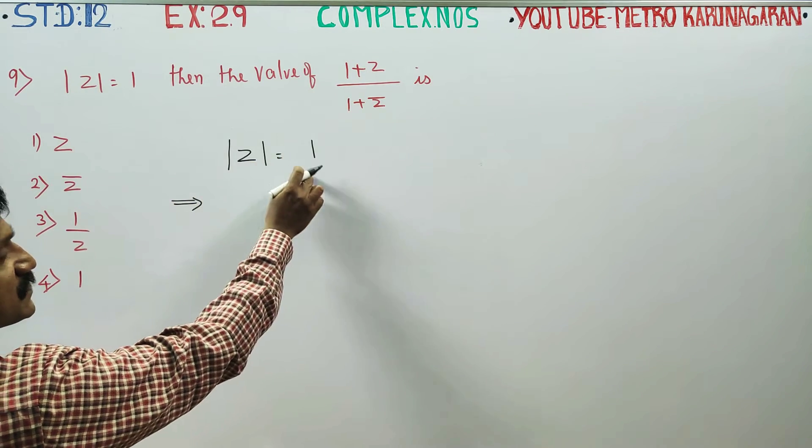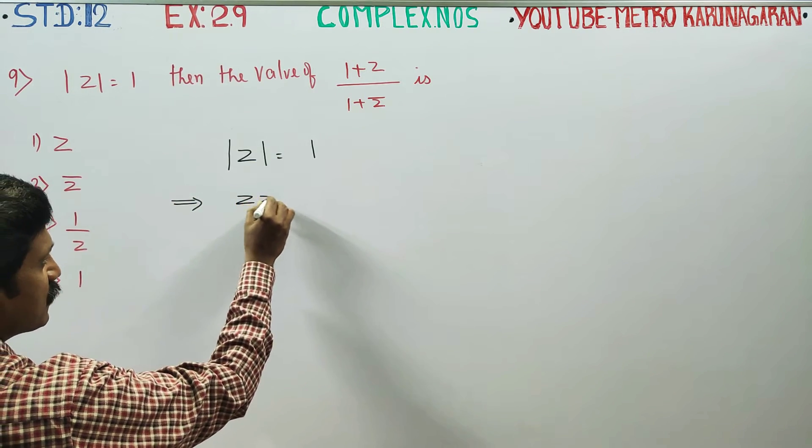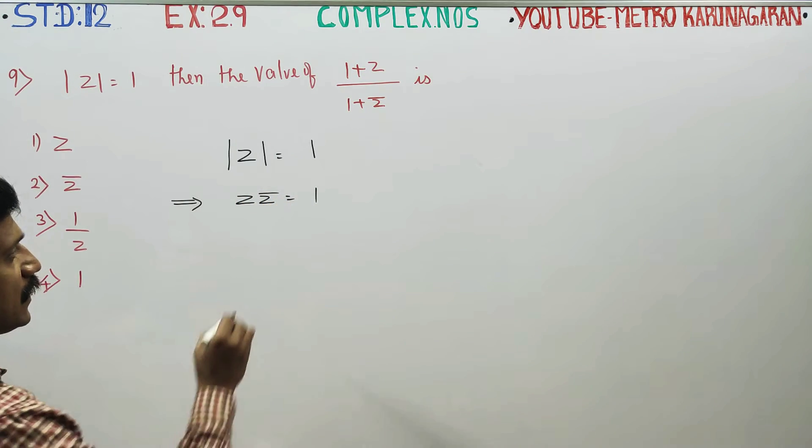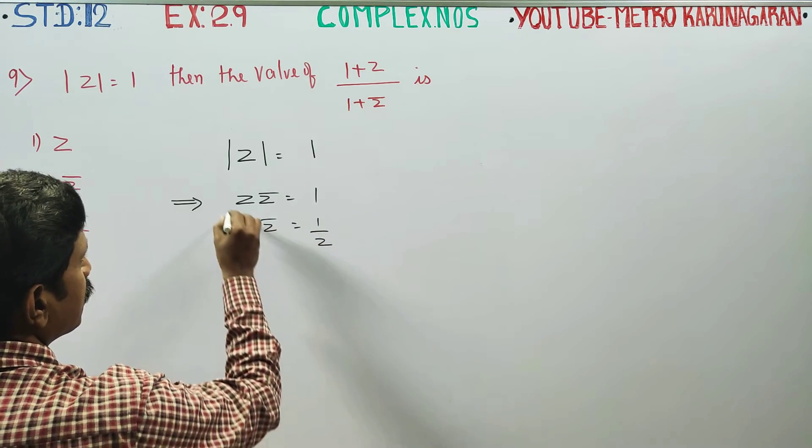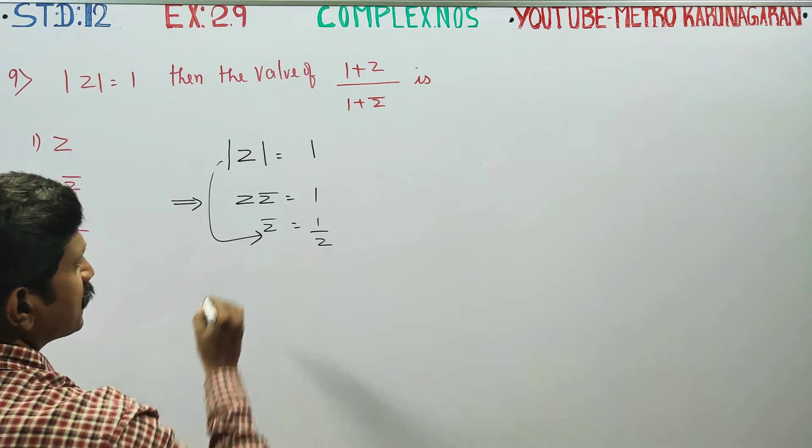If modulus of z is equal to 1, z into z conjugate answer 1. This one thing we can do is z conjugate is equal to 1 by z. This is the clue that we can do.